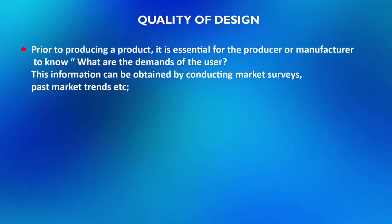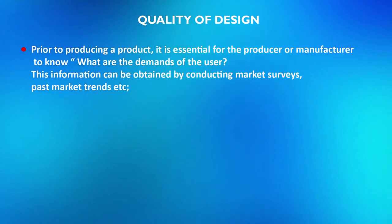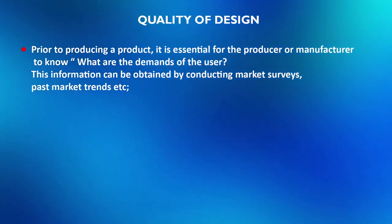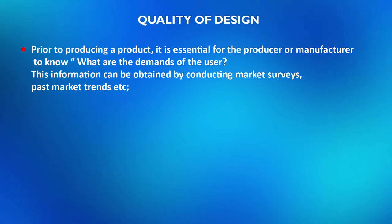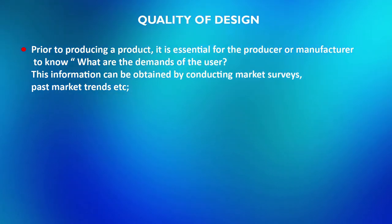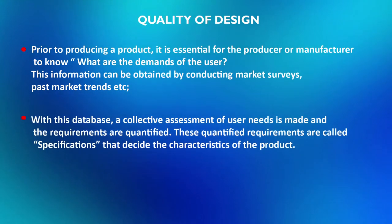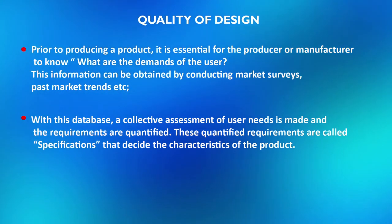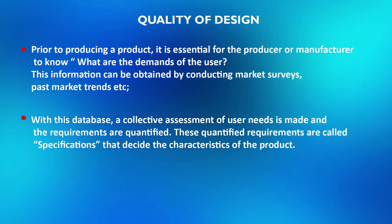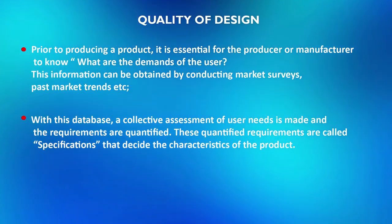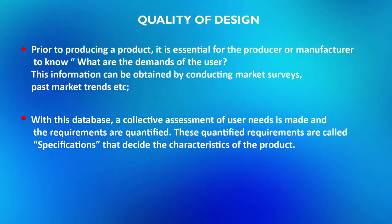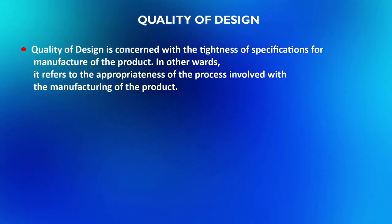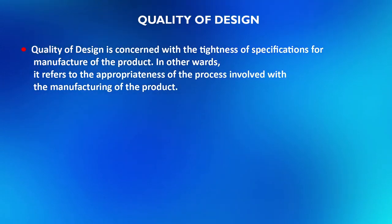Prior to producing a product, it is essential for the producer or manufacturer to know what the demands of the user are. This information can be obtained by conducting market surveys, past market trends, etc. With this database, a collective assessment of user needs is made and the requirements are quantified. These quantified requirements are called specifications, which decide the characteristics of the product.